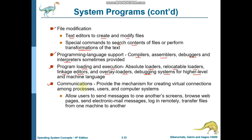The last activity under system programs is communication. It provides the mechanism for creating virtual connections — that is, temporary connections — among processes, users, and computer systems. This allows users to send messages to one another through electronic messages such as email. You can also log in remotely using credentials, and transfer files from one machine to another machine, which is also a communication activity.